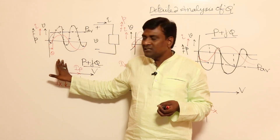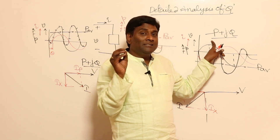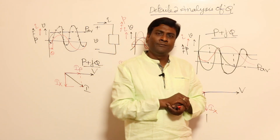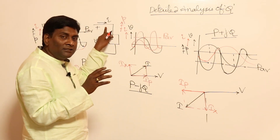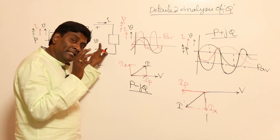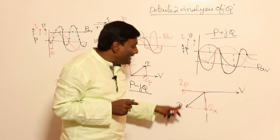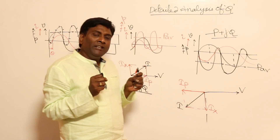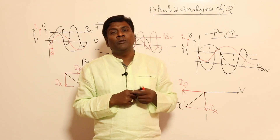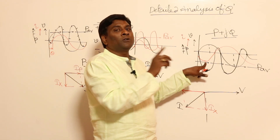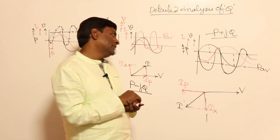An induction generator is a real-world example of this. In an induction generator, the current direction does not change — it remains the same as in motor mode — and voltage polarities also remain the same. However, the current is placed at more than 90 degrees with respect to the voltage, so the machine absorbs reactive power while delivering active power. This is how the direction of active power flow reverses in an induction generator.